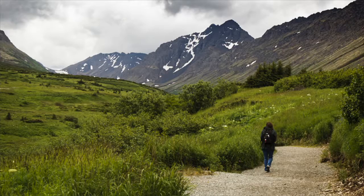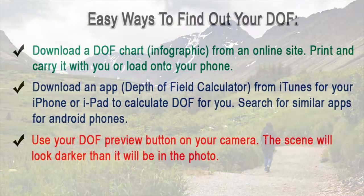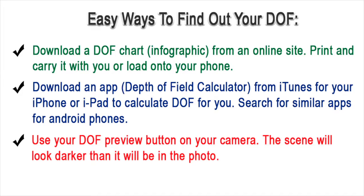Here's a tip to help you with your depth of field. Go to iTunes and download an app for your iPhone or iPad — only a little more than a dollar — called Depth of Field Calculator. For Android, iTunes or Google will find one for you. Or search online for a depth of field chart that you can download as a JPEG or PDF. Print it if you want to carry it with you in your camera bag. And last but not least, use your depth of field preview button on your camera — the scene is going to look darker than what the picture will actually turn out like.